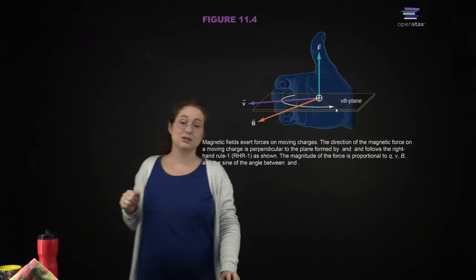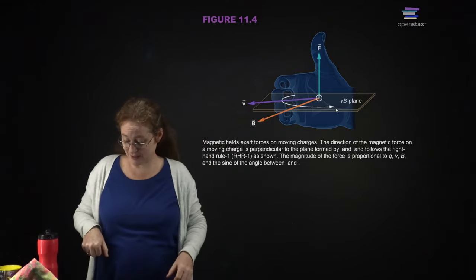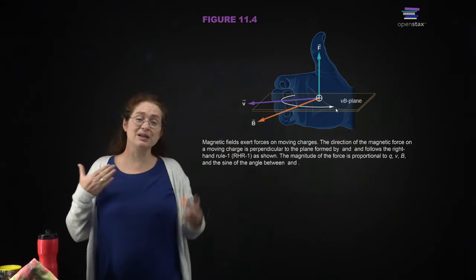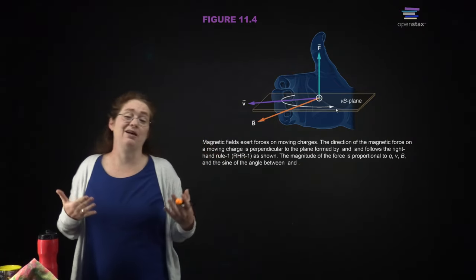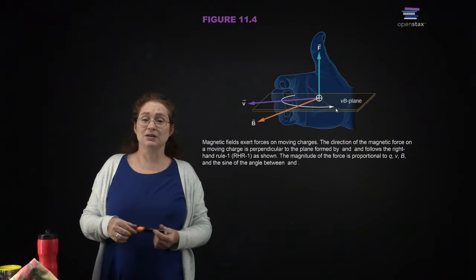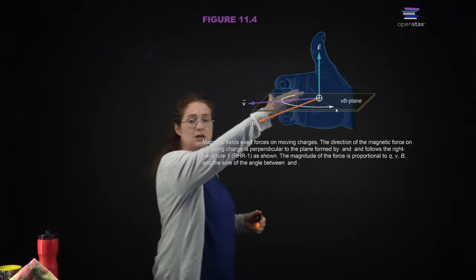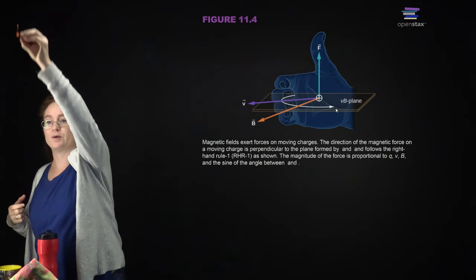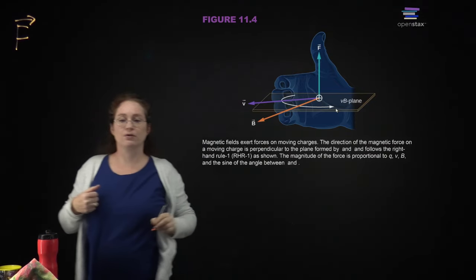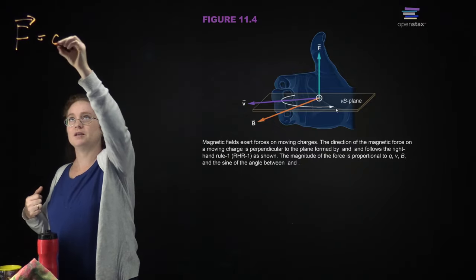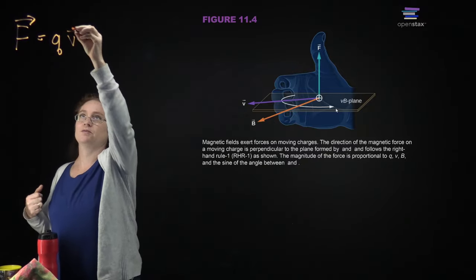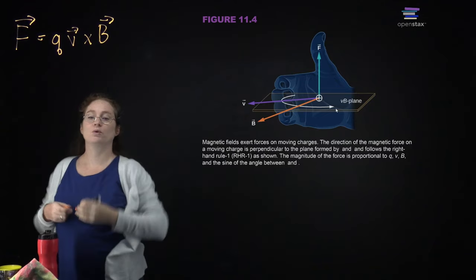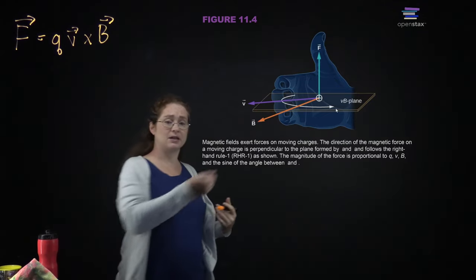Thank you for your patience. Now the right-hand rule — you will see this as a left hand, so we're going to have to adjust everything. There are a few different versions of this, but what really matters is that you have one, and you only need one that works. The equation we're going to work with is that the force on a particle from a magnetic field is equal to the charge of that particle times the velocity crossed with the magnetic field.